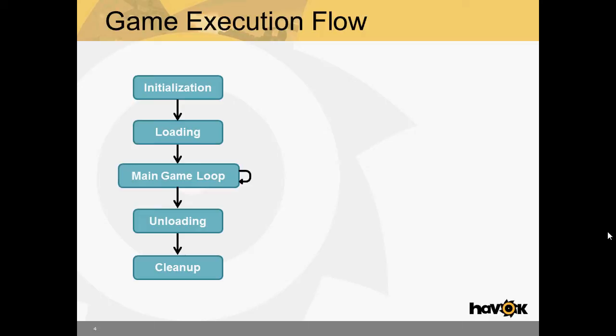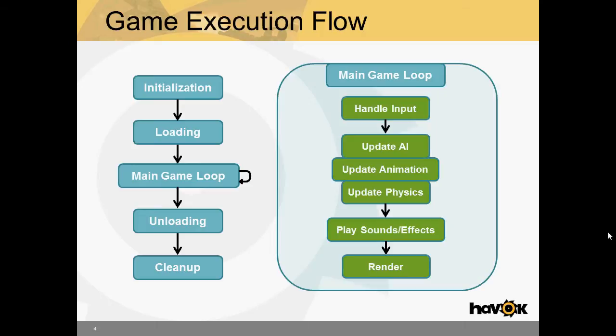And the more important part of this is the game loop. So what exactly would this look like? This is an extreme oversimplification, and different games would implement this in different ways. But basically what you have is you start off with the game loop by handling input, seeing what the user has pressed. And then you can update the AI, update the animation system, update the physics system, and then finally play sound effects, and then finally render all of that to the screen.